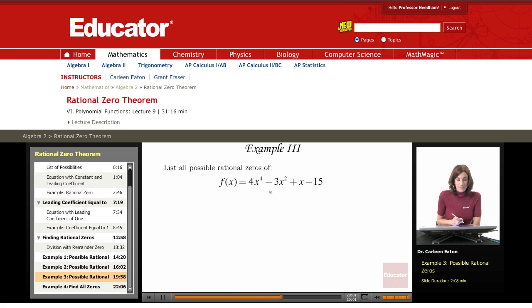List all possible rational zeros of this function. So I'm going to be looking for p over q, which equals the factors of the constant over factors of the leading coefficient.